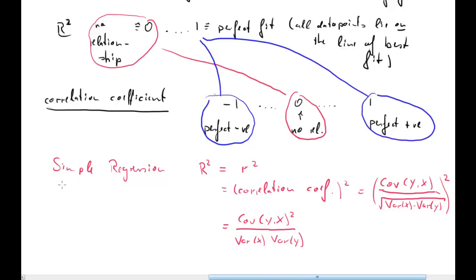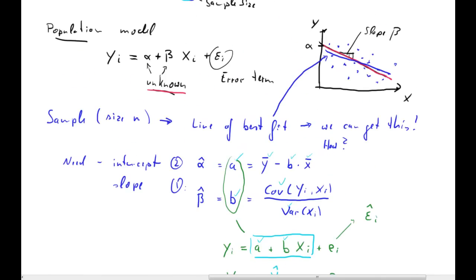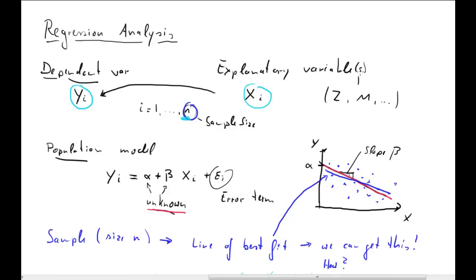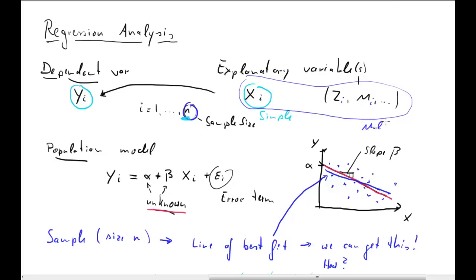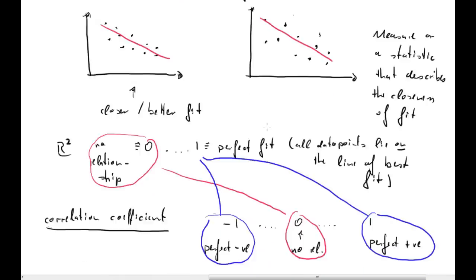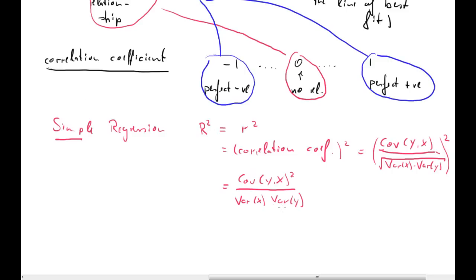Let me come back to the issue of simple regression. At the very beginning I mentioned we can have several explanatory variables. If we have only one, we call our regression analysis a simple regression. If we have more than one — x's, z's, and m's — then we call it multiple regression. We won't deal with the theory in detail, but in the Excel example I will show you how to do it. You already know how to calculate covariances and variances, so calculating R-squared shouldn't be much of an issue.